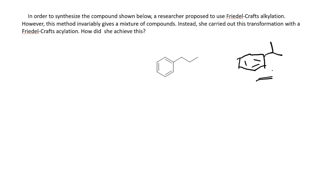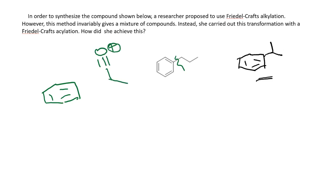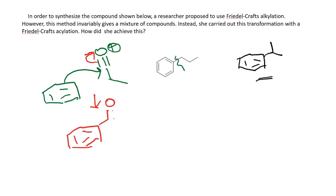In Friedel-Crafts acylation, you break the carbon-carbon bond retrosynthetically — you have the benzene ring and you need an acylium ion or oxycarbinium ion. This attacks the benzene ring, the bond moves to form C=O, and you end up with a ketone — specifically ethyl phenyl ketone — which can subsequently be reduced.